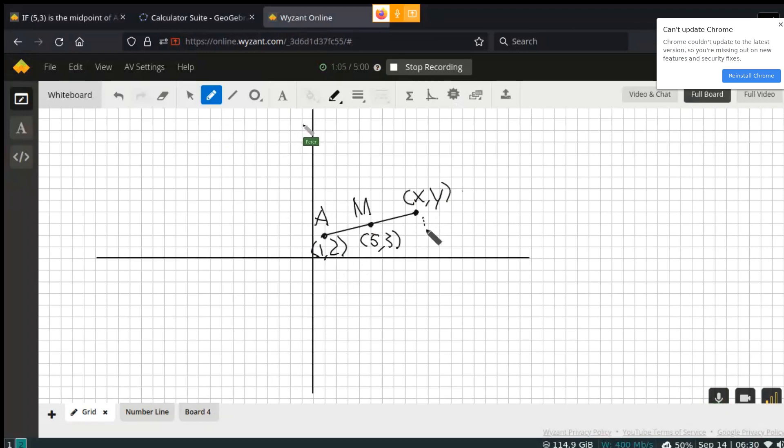Then how are we going to figure out what this point B is equal to? The way we're going to do that is with the midpoint formula. From the midpoint formula we know that 5 is going to be equal to (1 + x)/2.